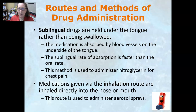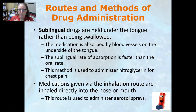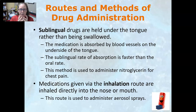Sublingual drugs are held under the tongue rather than swallowed. A tablet is placed under the tongue, allowed to dissolve, and is absorbed through the mucous membranes into the bloodstream. The medication is absorbed by the blood vessels on the underside of the tongue — there are many blood vessels there — so the sublingual rate of absorption is faster than the oral rate because it hits the bloodstream right away without traveling all the way down to the stomach and small intestines.